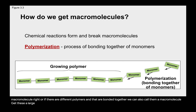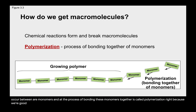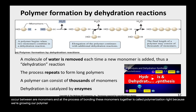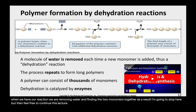To get these large strings of polymers, we need a chemical reaction. The process of bonding monomers together is called polymerization, because we're growing our polymer. Polymers are formed by dehydration reactions, meaning when the reaction occurs, we are removing water and binding the two monomers together as a result. Feel free to continue this lecture in part two.